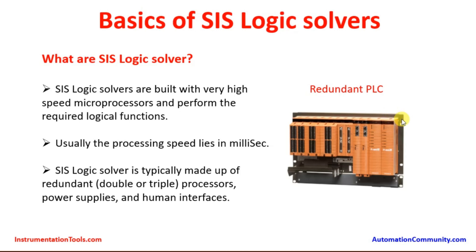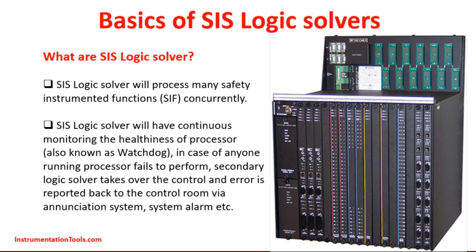Here we are seeing one picture showing a redundant PLC configuration. We are seeing two processors having the same functionality and working in parallel — this is a redundant configuration. We also have two redundant communication modules and redundant interface modules going to the other system, along with power supply modules.